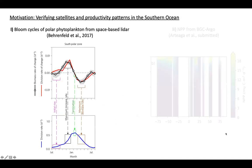My idea for today is to summarize two studies that share the common idea of trying to estimate phytoplankton division rates using the bio-optical information we get from the floats. The first study is a bloom study motivated by the analysis that Mike Behrenfeld has been doing using satellite information, in particular a space-based slider.